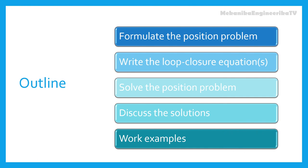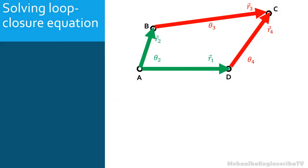After completing the problem formulation and writing the loop closure equation, we are going to learn how to solve the established loop closure equation. We have just established the loop vector equation: R2 + R3 = R1 + R4. First, we need to define the angles of all vectors R1, R2, R3, and R4.